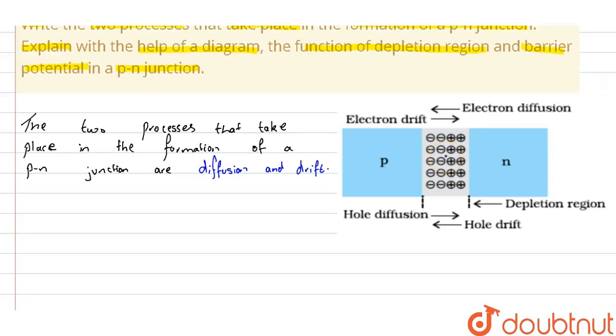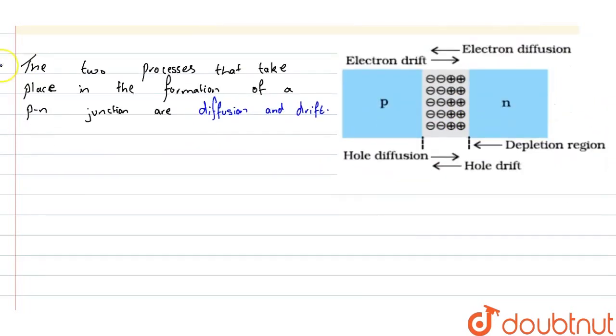When diffusion of electrons and holes occurs across the junction, a region of positive charge is created on the N-type side, and a region of immobile negative charge is created on the P-side near the junction. This is called the depletion region. Due to the diffusion of electrons and holes across the junction, immobile positive charge is created on the N-type side.